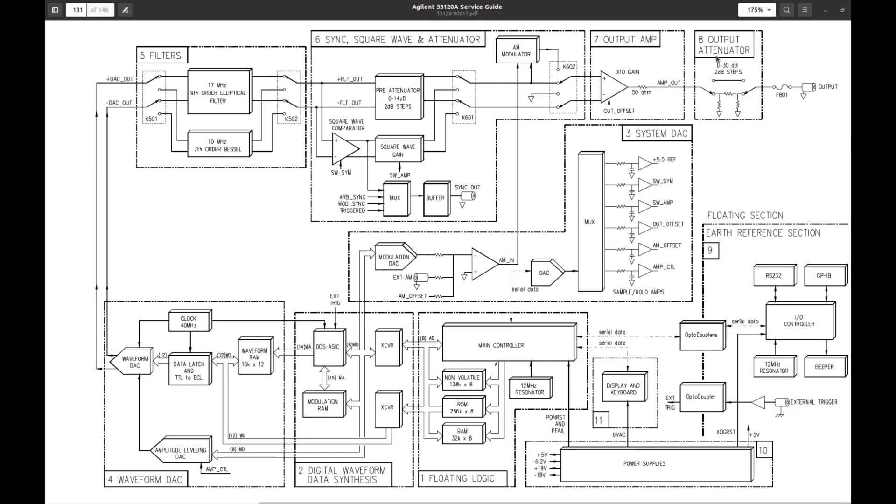The output of this goes to the output amplifier, where it becomes single-ended. After that it goes to the output attenuator, 0 to 30 dB in 2 dB steps. And after that there is this output connector on the front panel. Here AM modulation can be switched on, controlled by this part. And this part is another DAC and multiplexer to generate several control voltages. 5V reference. This is for square wave offsets and such. This is output offset.